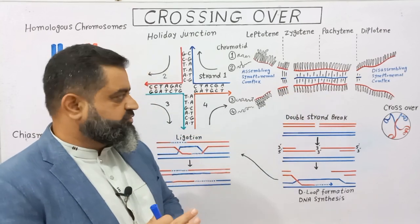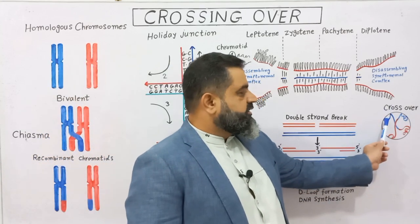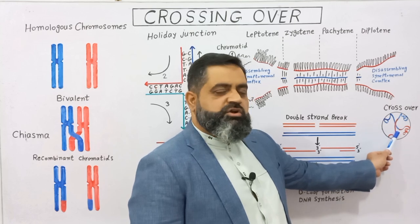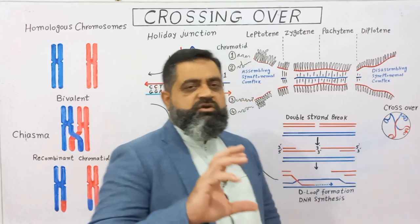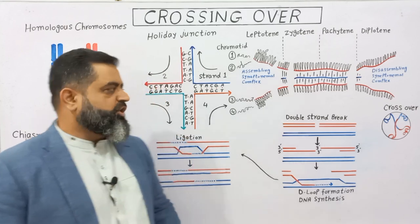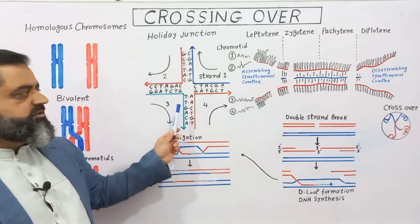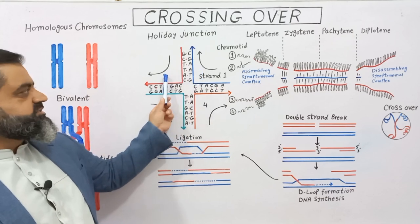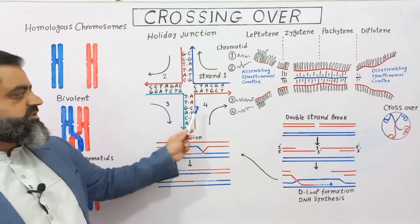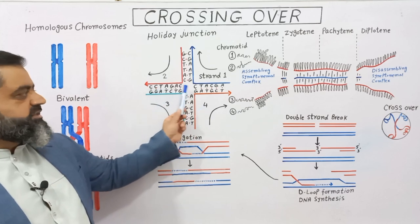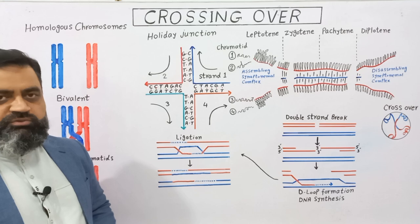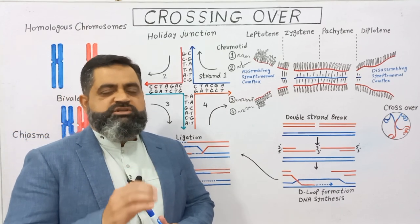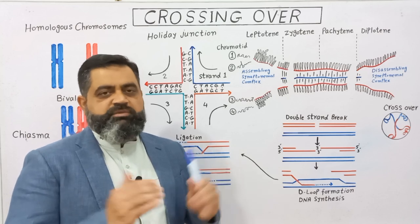During the process of crossing over, the genetic material of one chromosome exchanges with the genetic material of another chromosome, and a configuration is formed known as the Holliday junction. This contains four strands of DNA, and the base pairs between these DNA strands are exchanged. As a result, newly formed strands with new gene arrangements are assembled.